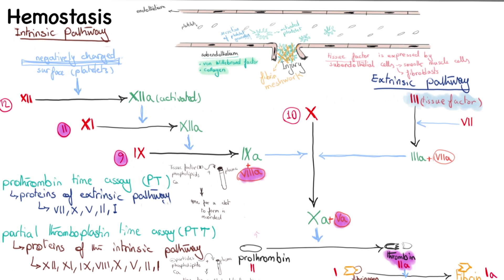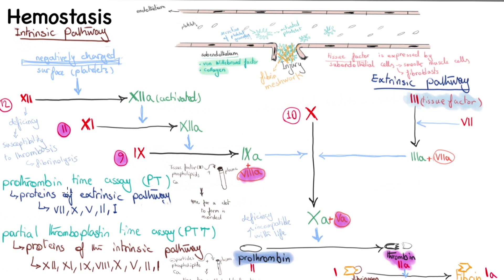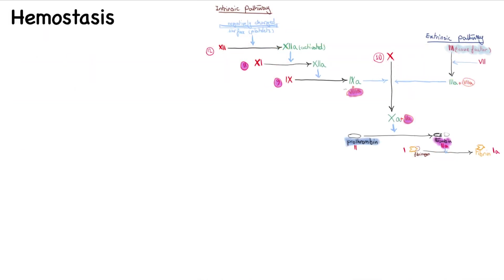The key clinical question in bleeding disorders is which coagulation factor is deficient. A deficiency of most coagulation factors causes a mild bleeding disorder, but a deficiency of prothrombin (factor 2) is incompatible with life. Interestingly, a factor 12 deficiency is associated with susceptibility to thrombosis rather than bleeding — a paradoxical effect explained by its role in the fibrinolysis pathway.